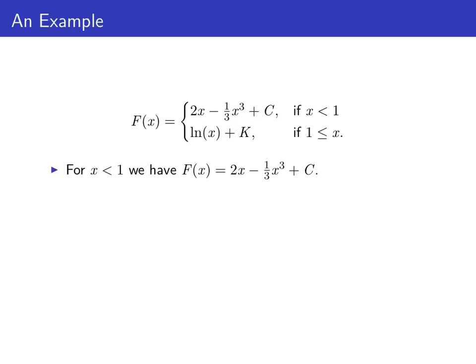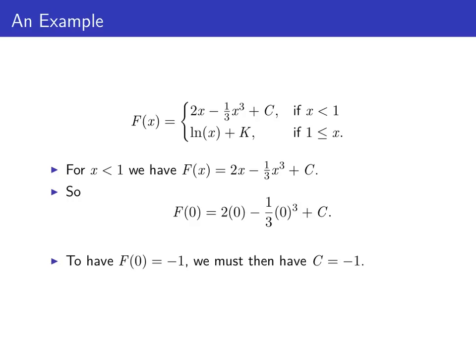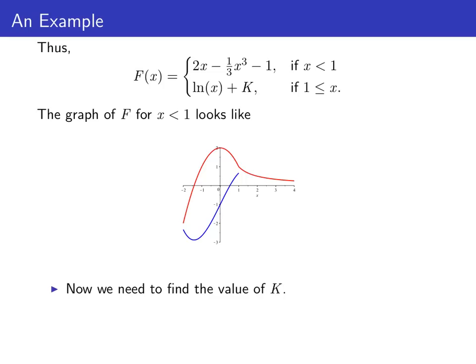Since 0 is less than 1, we use the rule F of x equals 2x minus 1 third x cubed plus c. So F of 0 equals 2 times 0 minus 1 third times 0 cubed plus c. If F of 0 is going to be negative 1, this equation tells us that c has to be negative 1.